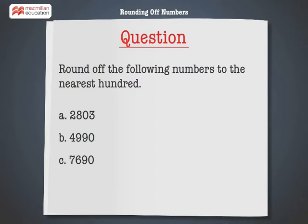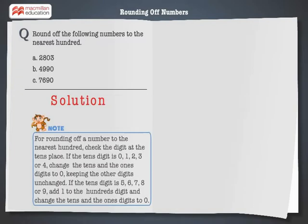Round off the following numbers to the nearest hundred. Let's recall that for rounding off a number to the nearest hundred, check the digit at the tens place. If the tens digit is 0, 1, 2, 3, or 4, change the tens and the ones digit to 0, keeping the other digits unchanged.